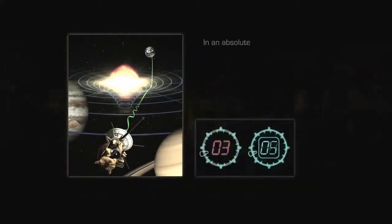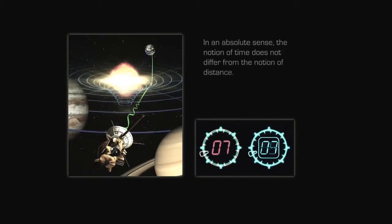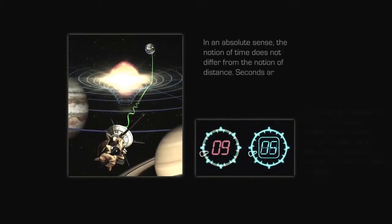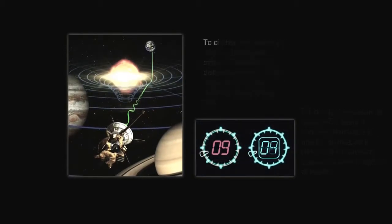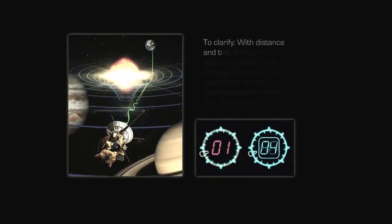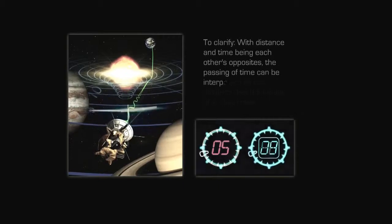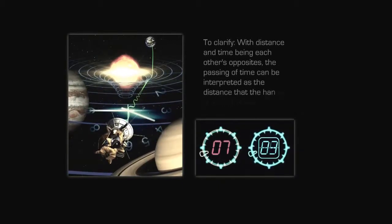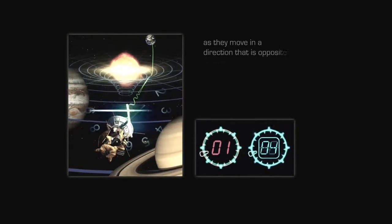In an absolute sense, the notion of time does not differ from the notion of distance. Seconds are equal to light seconds but cancel each other out. To clarify, with distance and time being each other's opposites, the passing of time can be interpreted as the distance that the hands of a clock travel as they move in a direction that is opposite to time.